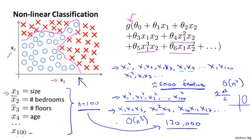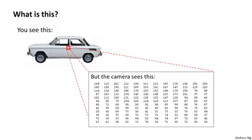For many machine learning problems, n will be pretty large. Here's an example: let's consider the problem of computer vision. Suppose you want to use machine learning to train a classifier to examine an image and tell us whether or not it is a car. Many people wonder why computer vision could be difficult — when you and I look at this picture, it's so obvious what it is. To understand why computer vision is hard, let's zoom into a small part of the image like the area where the little red rectangle is. It turns out that where you and I see a car, the computer sees a matrix of pixel intensity values.